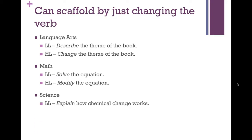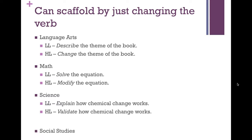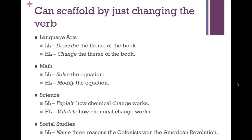When it comes to science, if students explain how a chemical change works, they're simply showing understanding. But if you ask them to validate — to justify, to make an argument for why — then they're using the evaluating level of thinking. For social studies, if they simply name three reasons the colonists won the American Revolution, that's just remembering. But if you ask them to rank three reasons the colonists won and defend why one is most important, they're having to evaluate and justify — a different level of thinking.